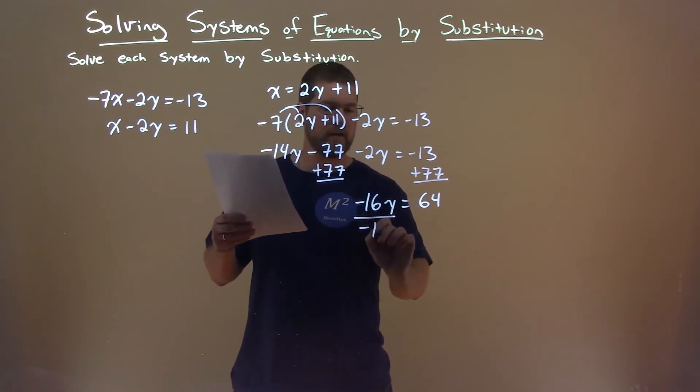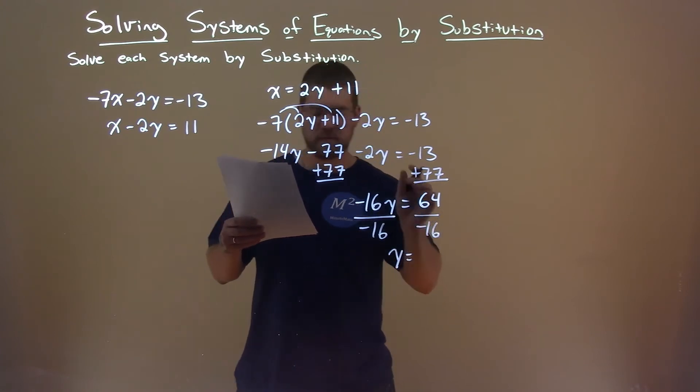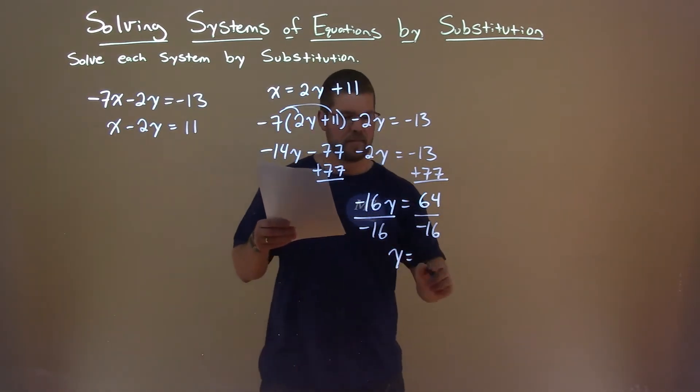Divide both sides by negative 16, and y by itself is 64 divided by negative 16, which is negative 4.